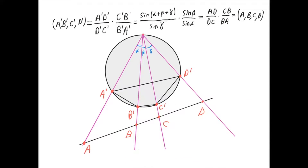Interestingly, we can define the cross ratio of four points not only when they lie on a straight line, but also when they lie on the same circle. Suppose that we have a prime, b prime, c prime, and d prime, which are points on this circle. Then we can define the cross ratio of a prime, b prime, c prime, and d prime as usual: a prime d prime divided by d prime c prime times c prime b prime divided by b prime a prime. So we get this equality here.